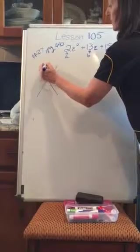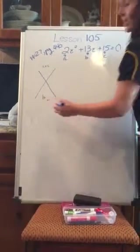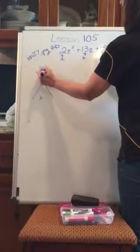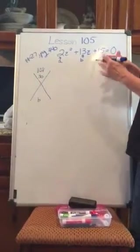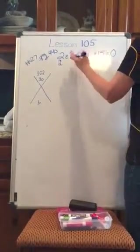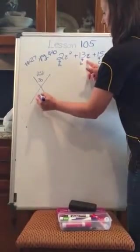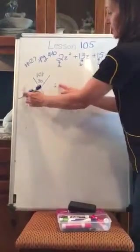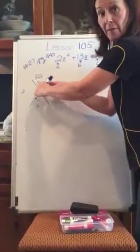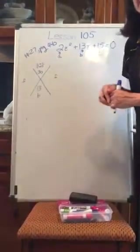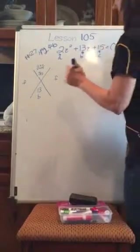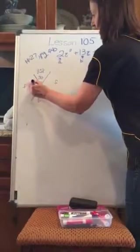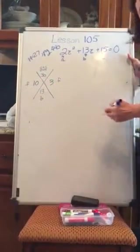All right, so this is 2 times 15, which is 30. And I do take into consideration my signs. b is 13. So now here are going to be the factors of 30, such that if I multiply them, I get positive 30. I add them, I get positive 13. All right, so 10 times 3, that's what it's going to be. 10 times 3 is 30. 10 plus 3 is 13.